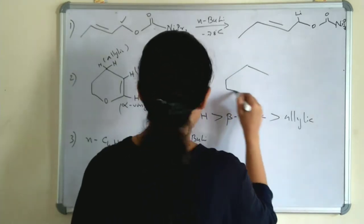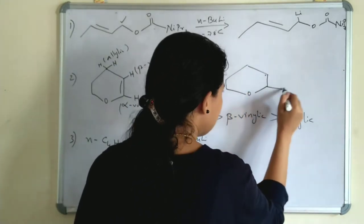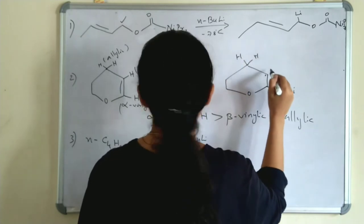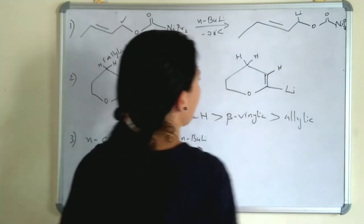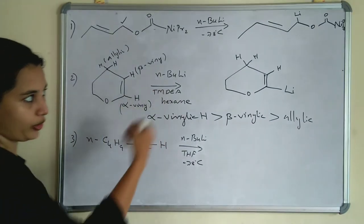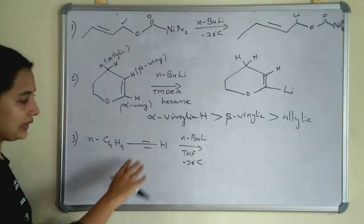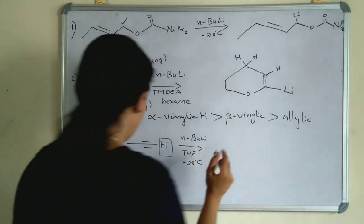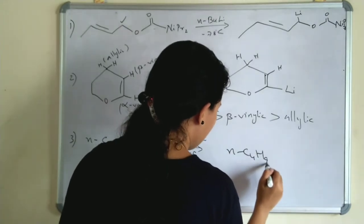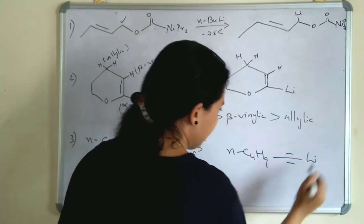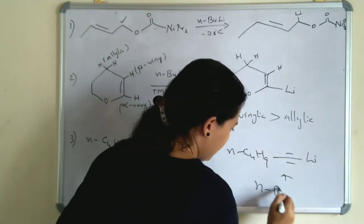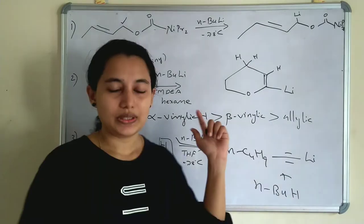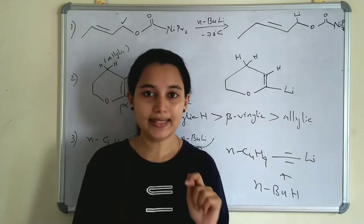At the alpha-vinylic hydrogen position, Alkylithium will attach — lithium replaces the hydrogen at that position. In the third example, an alkyne is given; the terminal alkyne hydrogen can also be deprotonated. The product becomes the lithium acetylide (RC≡C-Li), and the remaining product is n-BuH, because n-butyl lithium was used as the reagent. These are examples of deprotonation by Alkylithium.